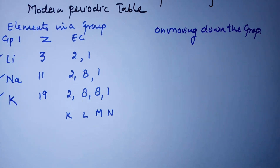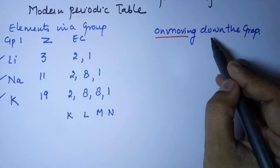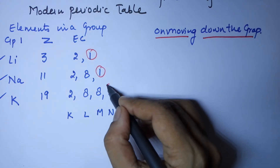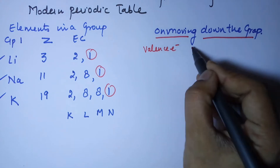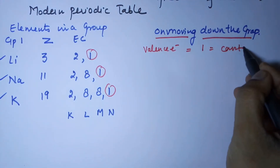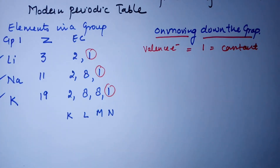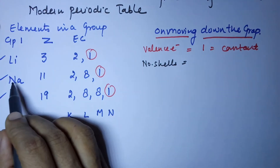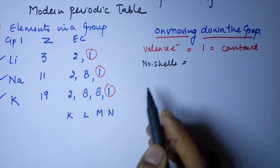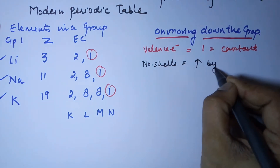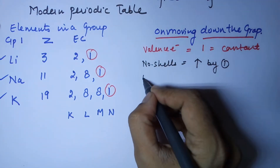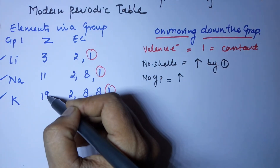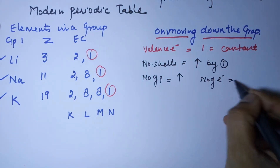Let us closely observe the properties and any variation or similarity in the elements in a particular group. When we move down the group, the first thing we observe is that the outermost electrons remain the same - valence electrons equal 1, and it remains constant. The number of occupied shells increases: lithium has 2, sodium has 3, potassium has 4. The number of protons and electrons is also increasing rapidly - 3, then 11, then 19.